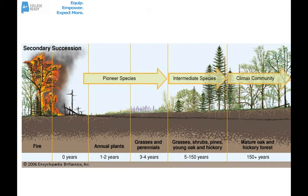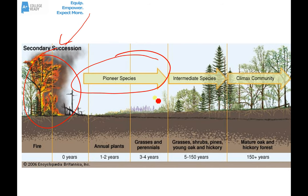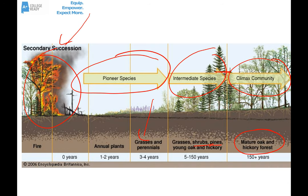A diagram of secondary succession shows: starting from an oak-hickory hardwood forest, a fire burns away most everything. Then new pioneer species like annual plants and grasses move in, followed by intermediate species like shrubs and pines, until eventually the hardwood forest grows back and we return to a more stable climax community with an oak-hickory hardwood forest. That's it for our screencast on community ecology.